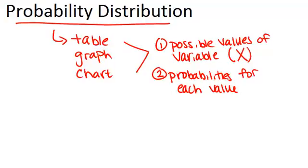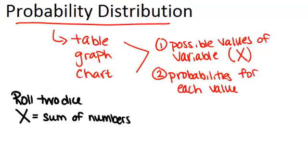So let's think about an example. What if we were to roll two dice and our random variable was the sum that came up? So we can first make a chart to keep track of what all the possible sums are in order to then make a probability distribution.